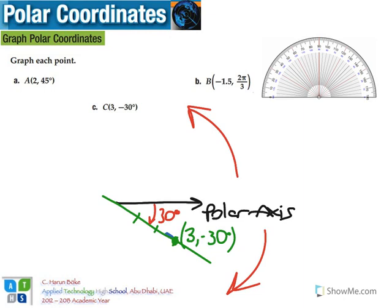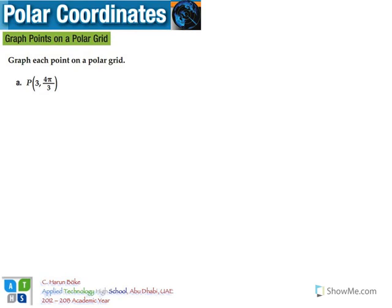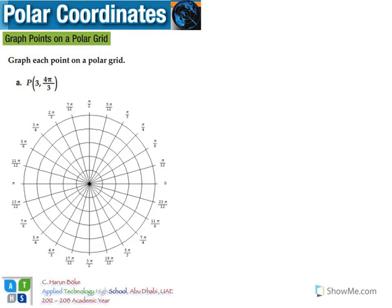Now, let's see how we plot the points on polar grids. In this example, it says, graph each point on a polar grid. The first point is P with (3, 4π/3). Now, our polar grid is something like that, and my polar axis is here, where it says 0.